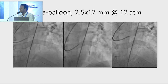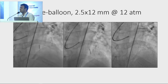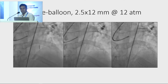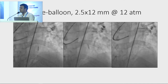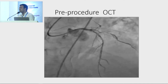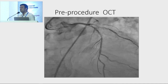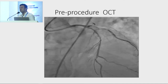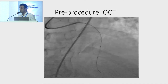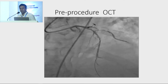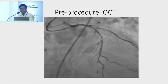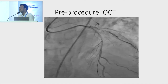We pre-dilated the lesion with a 2.5 by 12 millimeter balloon at 12 atmospheres. As we were still confused about where to place the stent at the proximal LAD, we went for an OCT run.